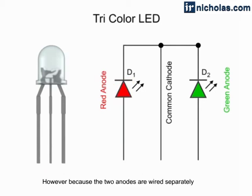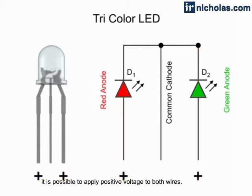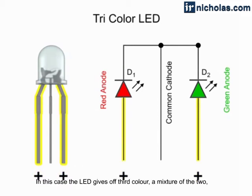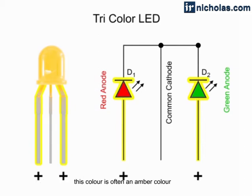However, because the two anodes are wired separately, it is possible to apply positive voltage to both wires. In this case, the LED gives off a third color, a mixture of the two. This color is often an amber color.